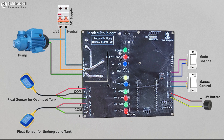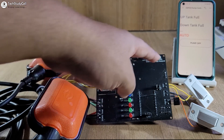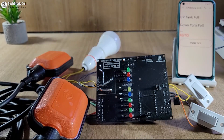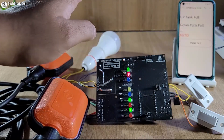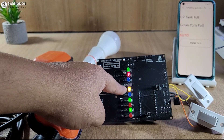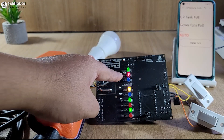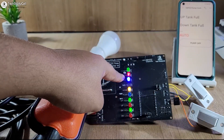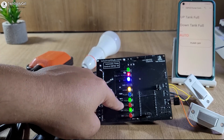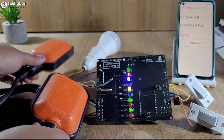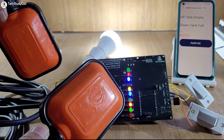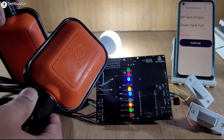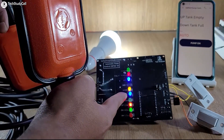Now please refer to the circuit diagram to connect the float switch and the buzzer with this PCB. Here you can see I have connected all the components as per the circuit. Now let me turn on the supply. Instead of the pump, I have connected this AC lamp for demonstration. By default, the circuit is in auto mode, so this mode LED turns on. After connecting with the Blynk server, this blue LED will turn on. Now both green LEDs are on, which indicates both tanks are full right now.